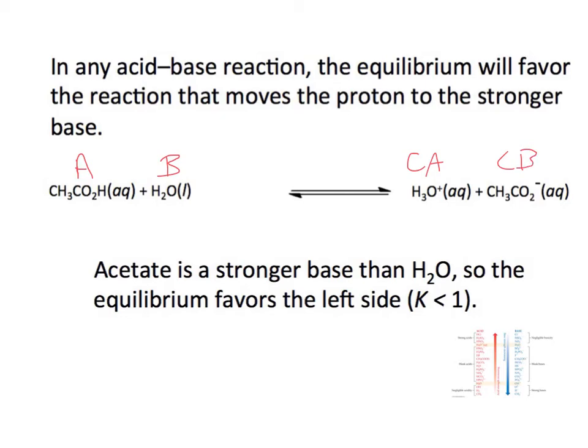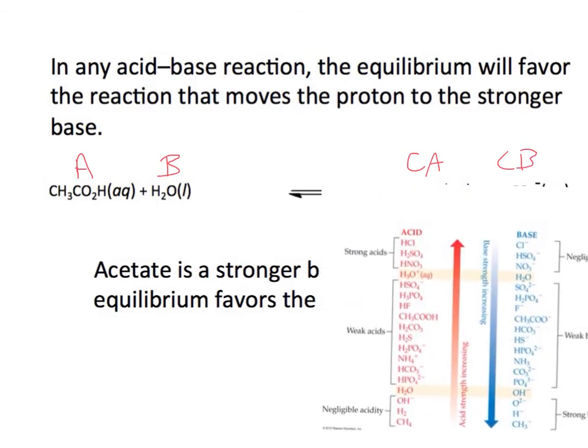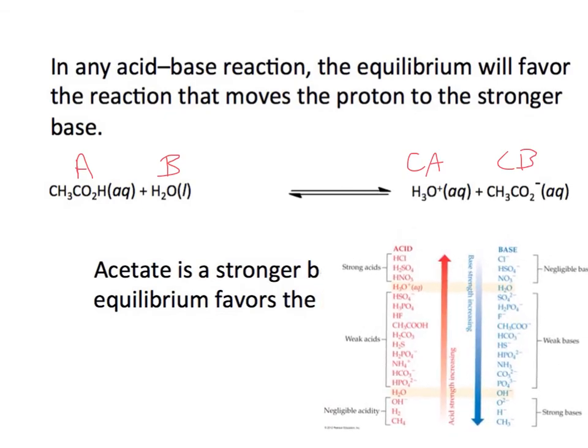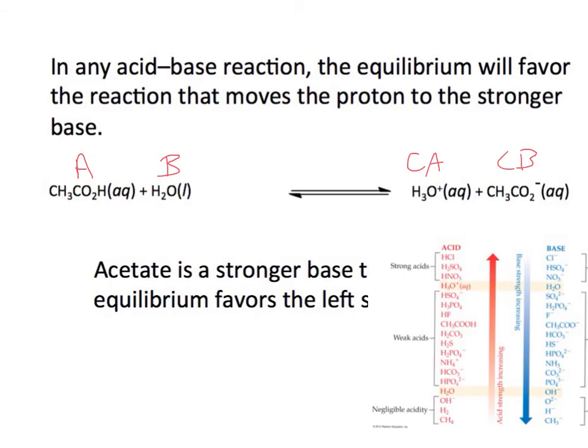This base here is called acetate, this base is water. Let's find them - acetate is here and water is here. Acetate is a stronger base than water, thus the reverse reaction will be favored a little bit more, not terribly more in this case, but according to the chart it will be favored more.